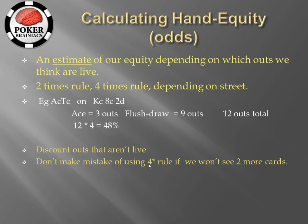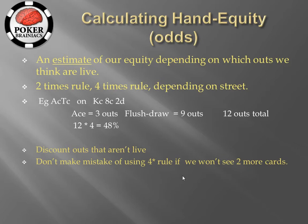Also, don't make the mistake of using the four times rule if you probably won't see two more cards. Normally if you are on the flop you will use the four times rule, but if villain is the type that will fire a big barrel on the turn very often and you know you are not going to have direct pot odds to call on the turn, it makes more sense to use the two times rule. In the same way that you can partially discount outs, you can also partially discount the multiplier. For example, if villain is going to barrel you off on the turn 50% of the time, you could multiply your outs by 3 — halfway between 2 and 4.